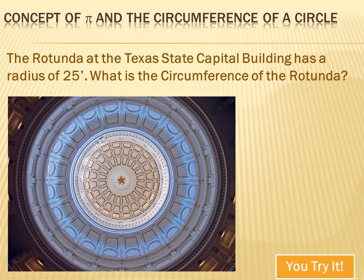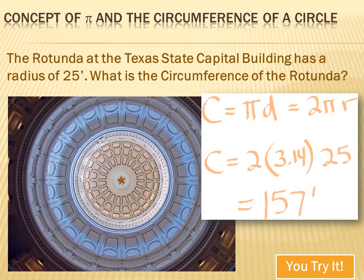Well, how are we going to figure out what the circumference of the rotunda is? Well, again, we know the radius, and we know the formula. So, all we have to do is put 25 feet into the formula, and we can figure out what the circumference is. The circumference is 2 pi r, and pi equals 3.14, and r equals 25 feet. So, if we multiply 2 times 3.14 times 25 feet, we get 157 feet.